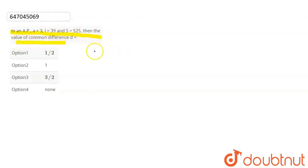First of all, S equals the sum of n terms: n by 2 into first term plus last term. Putting values in this, that is n by 2 into first term 3, last term 39, which is equal to 525. Here solving this, that is n equal to 25.